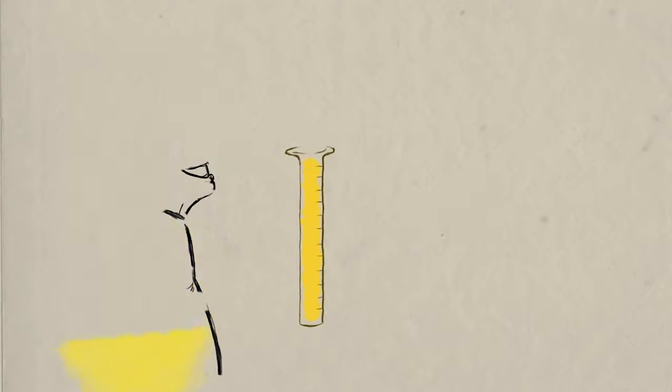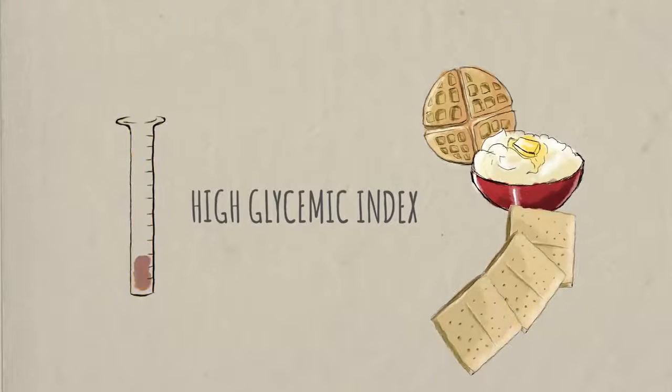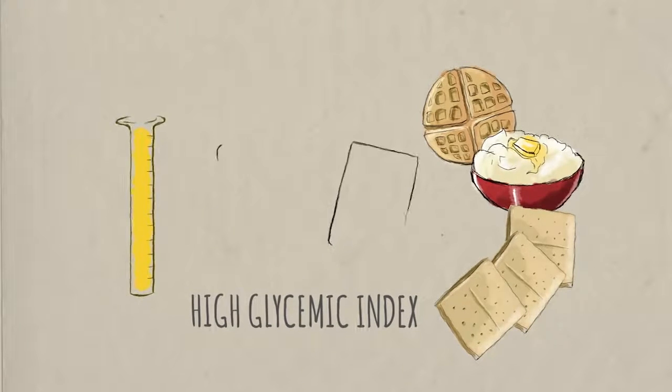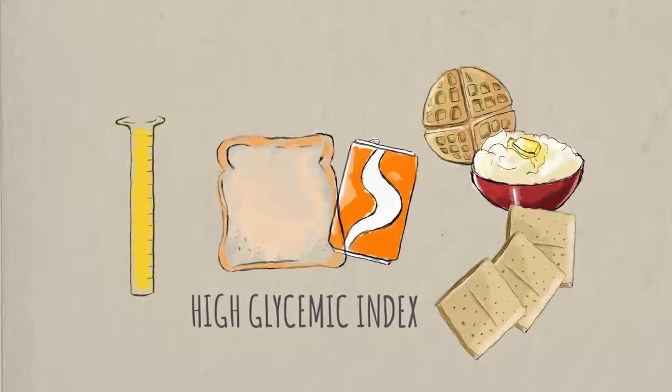These foods have a high glycemic index, the amount that a particular food raises the sugar level in your blood. Soda and white bread have a similar glycemic index, because they have a similar effect on your blood sugar.